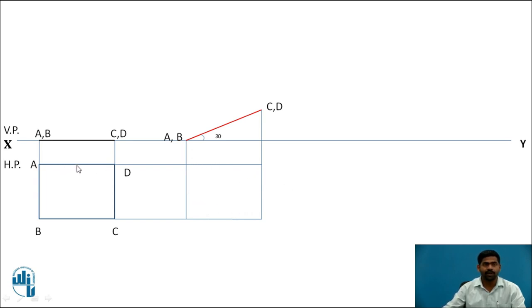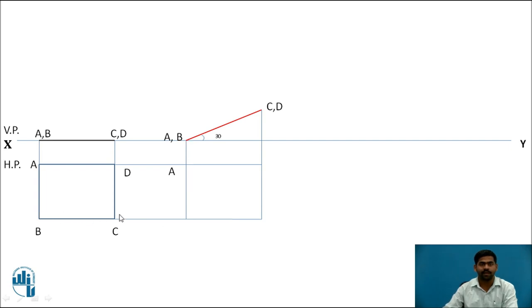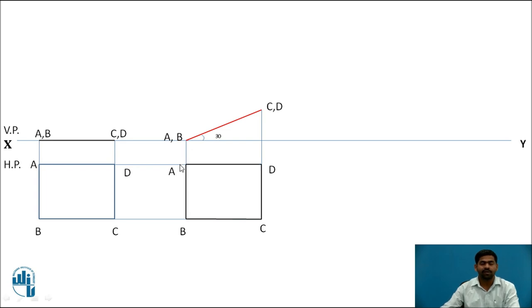Now, intersection of the projection from point A gives the first point A. Similarly, the intersection from projection from point B gives point B. In the same way, you will get points C and D. Now join AB, BC, CD and AD. The second stage for the problem is now completed.